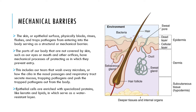The parts of our body that are not covered by skin, such as our eyes, mouth, or other orifices, have mechanical processes that protect us and prevent pathogens from entering. This includes our tears that wash away microbes, or how the cilia in our nasal passages and respiratory tract will secrete mucus, which traps pathogens and pushes them out of our body.